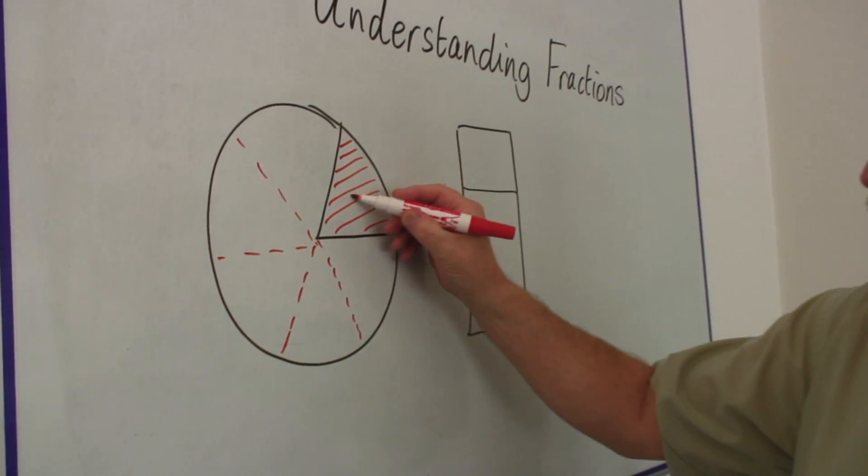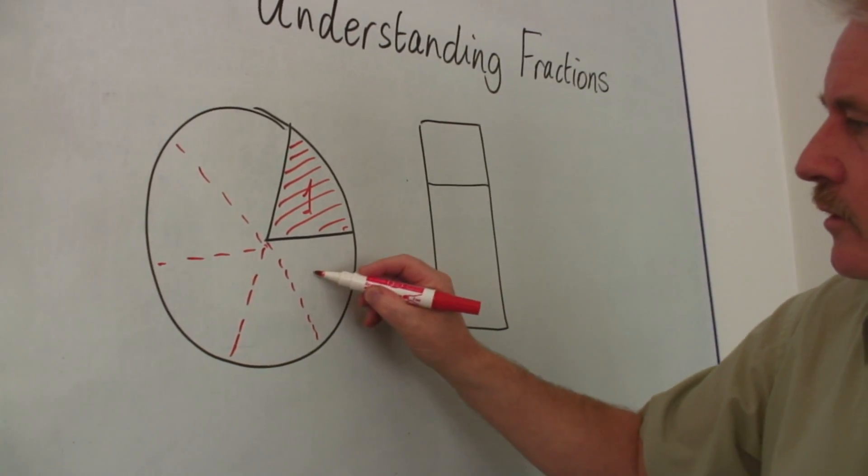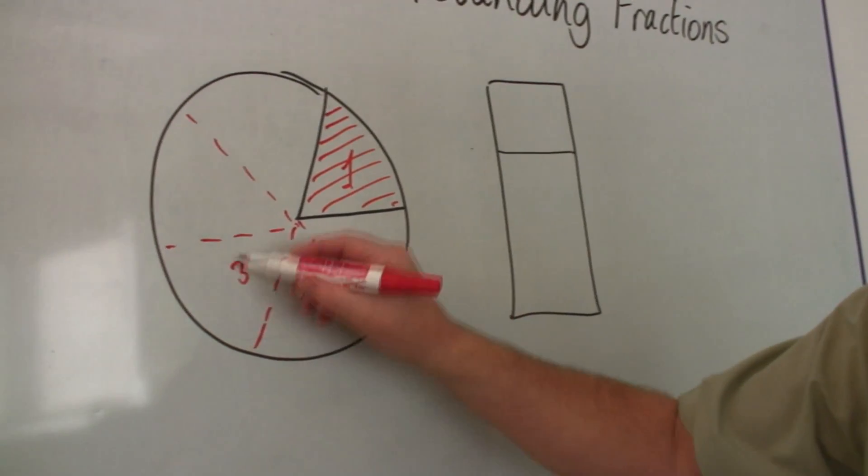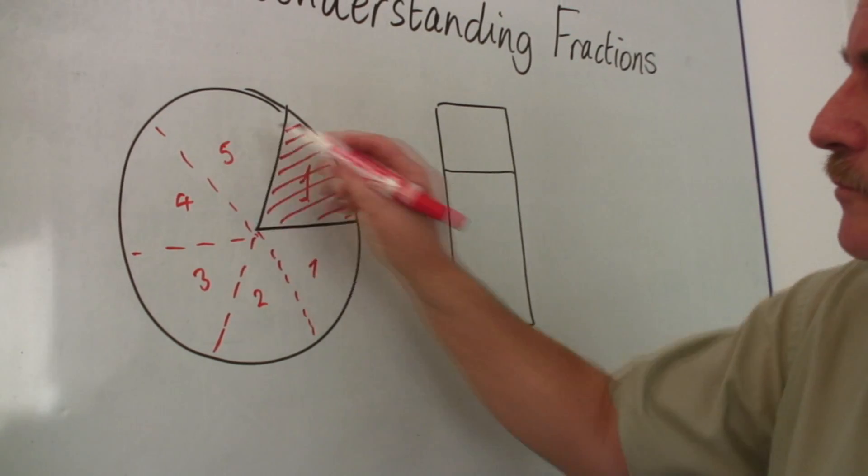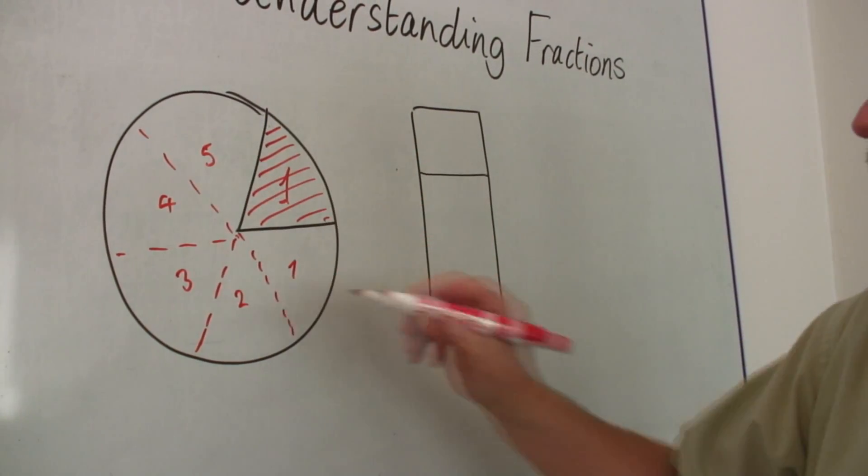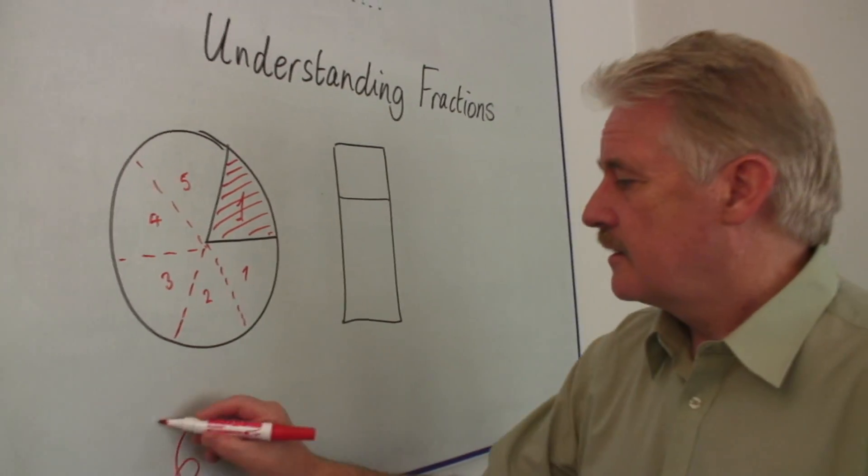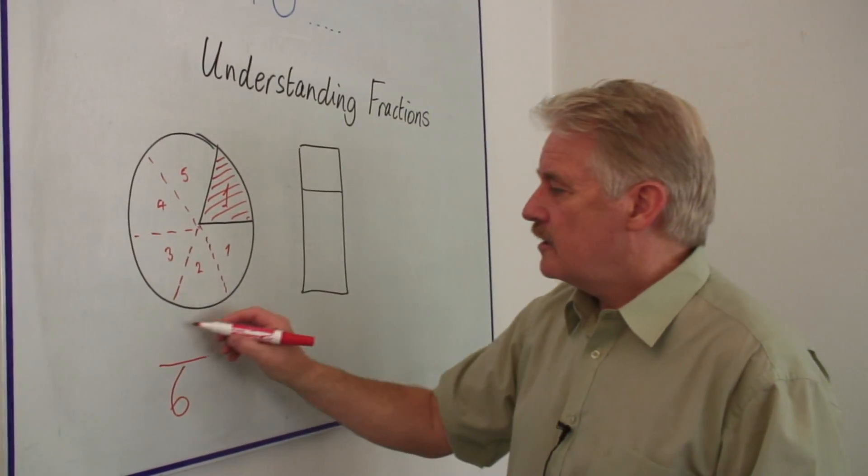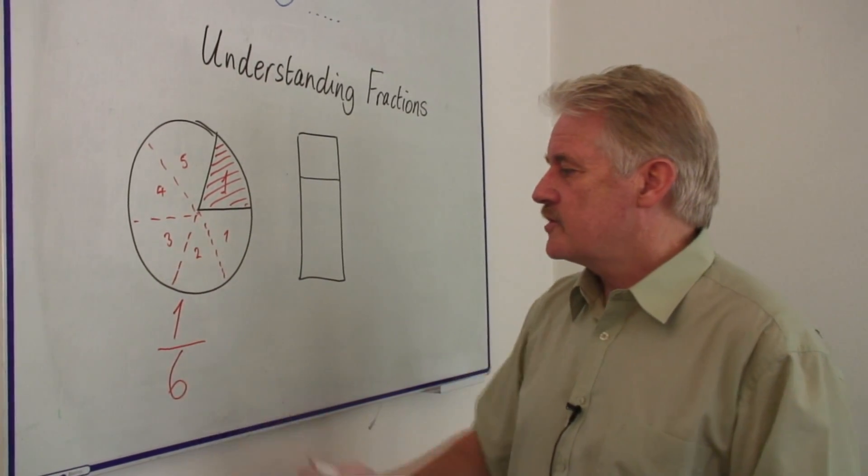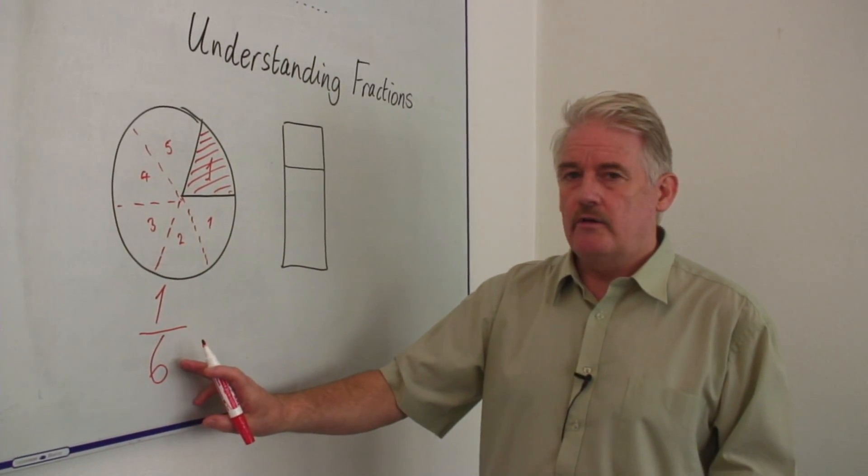So this is one and then we've got one, two, three, four, five more. Altogether, we've got six. So out of six, this fraction is just one out of the six. And we write it one over six.